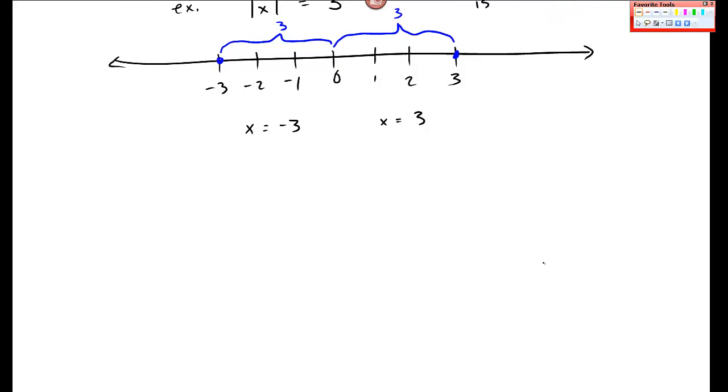So you can imagine when I go to maybe a slightly more complicated problem. Absolute value of x plus 2 is equal to 5. I want x plus 2 to be 5. That means the distance from x plus 2 is either negative 5, or x plus 2 is positive 5. I get these two splittings.